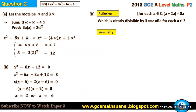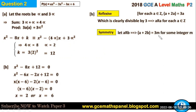For symmetry, we use the definition: a relates b means a + 2b is a multiple of 3. We check whether a relates b being a multiple of 3 also implies b relates a is a multiple of 3. So a relates b implies a + 2b = 3m, where m is an integer.